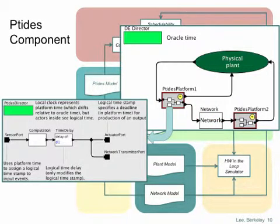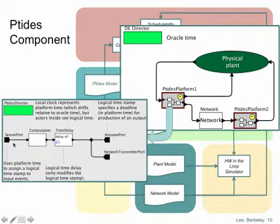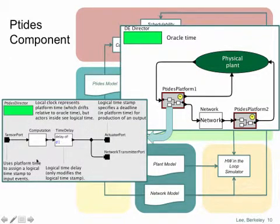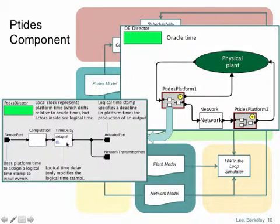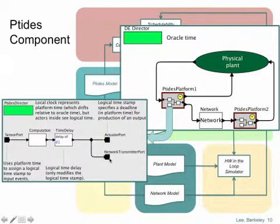A simple PTIDES model looks like this. The input ports to PTIDES platform 1 map into sensor ports inside the PTIDES model, representing sensors that capture data coming from the physical plant. The data from sensors gets timestamped, and the PTIDES director executes a model in an event-driven fashion, using these timestamps to guide execution as it would in a discrete event simulation. The computation block responds to a stimulus from the sensor port — a timestamped event — by performing some computation. A time delay component introduces a logical time delay, which modifies the timestamp of the event, and subsequently drives an actuator port and sends a timestamped message over the network transmitter port.